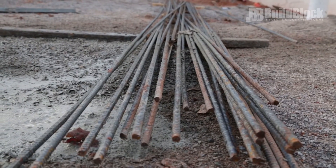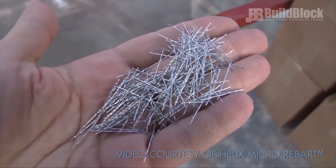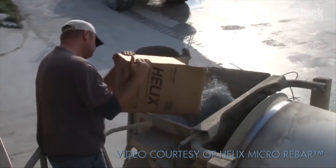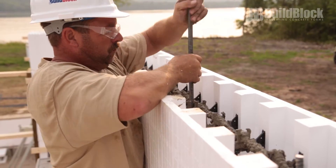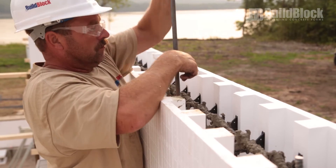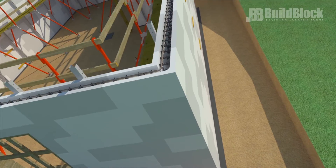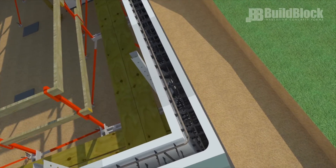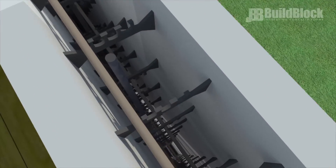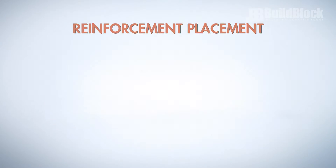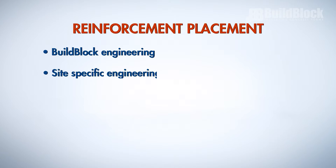Concrete is typically reinforced using rebar, but other products such as helix micro rebar can be used. These reinforcements can be placed in different areas throughout the wall to provide additional strength. In below-grade basement applications with backfill on one side, rebar is generally placed on the tension side of the wall, providing additional strength for the pressure of backfill on the wall. Use BuildBlock engineering, site-specific engineering, or local codes to ensure adequate and proper reinforcement placement.